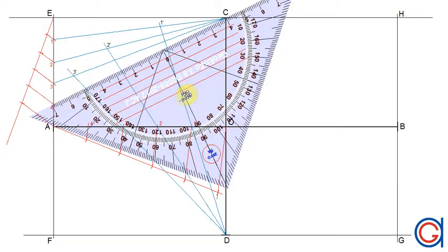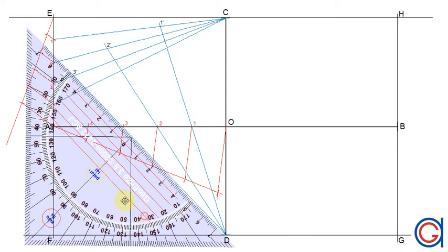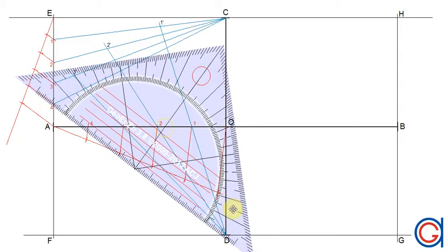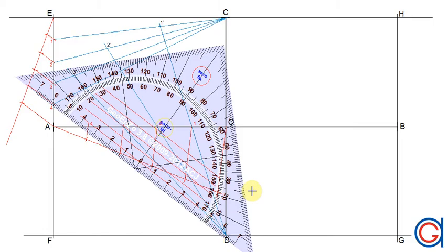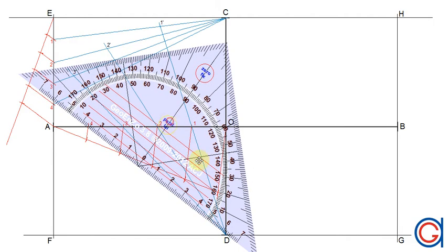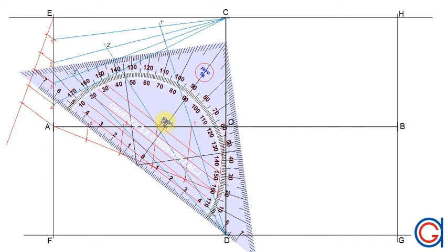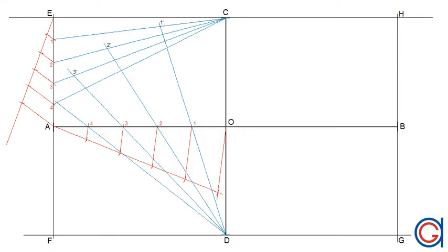For our fourth division, we join C to point four, and to get our fourth point on the ellipse we join point D going through division number four until it cuts the previously drawn line to get point four prime. So now we have completed the first quadrant of the ellipse, and we have four points: point C, one prime, two prime, three prime, four prime, and A.